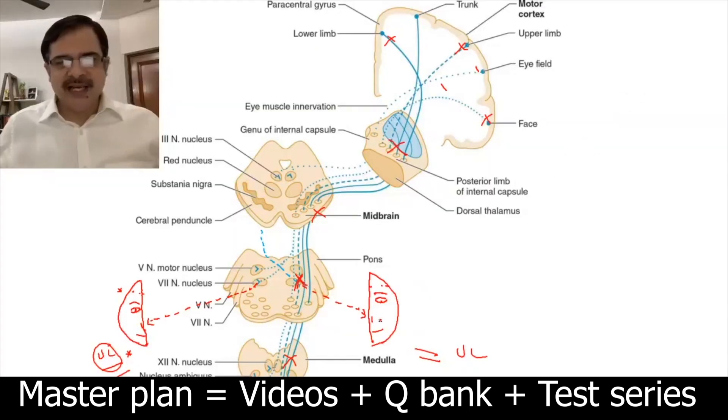The same side of the face will be paralyzed, but opposite side of limbs - upper limb and lower limb - will be affected. While if there is a lesion in the medulla, in that case face will be spared.